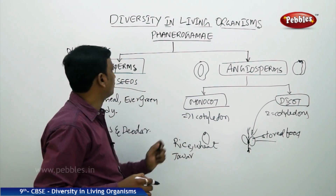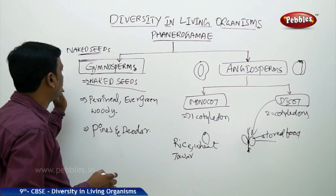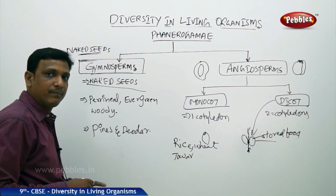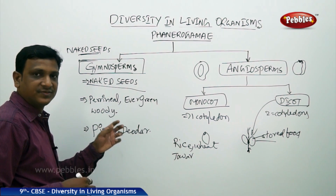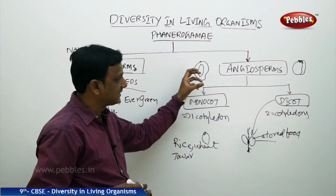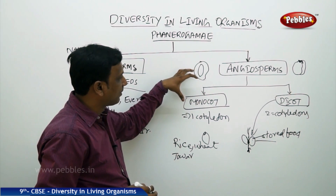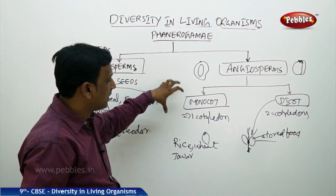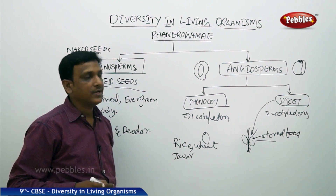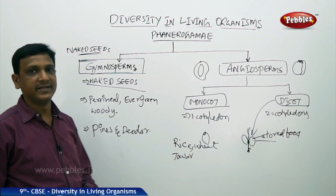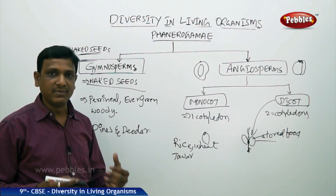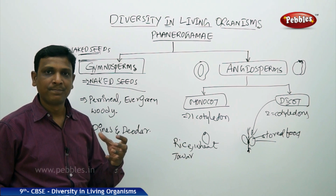So monocots and dicots both come under the group Angiosperms. Phanerogamae is divided into Gymnosperms and Angiosperms. In Gymnosperms we find plants with naked seeds and cones — seeds are present directly on cones without any fruit. Whereas in Angiosperms, fruits enclose the seeds, and depending on the number of cotyledons they are divided into monocots and dicots. Monocots have one cotyledon; dicots have two cotyledons to support the growth of the embryo. This is the classification of Kingdom Plantae. Next we will see the classification of the fifth and biggest kingdom — Animalia.